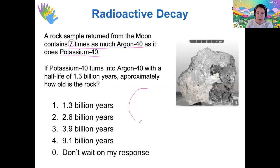Meaning that if I was going to draw a pie chart, I would have eight parts, and only one of these would be remaining potassium, right?